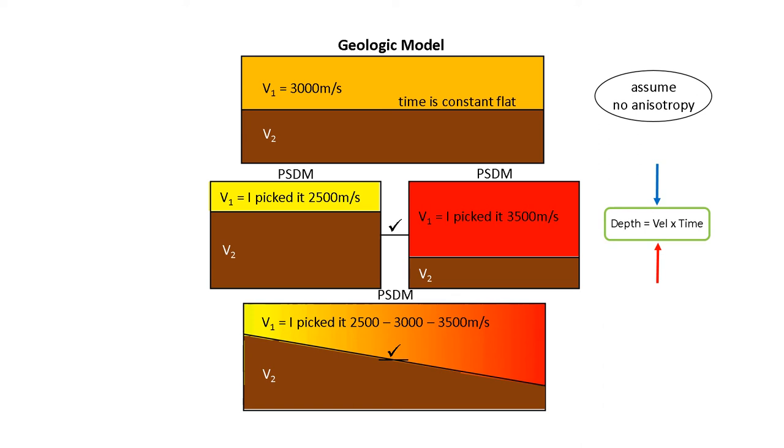What if we pick the velocities laterally changing? So they were 2500 meters per second here on the left and 3500 meters per second here on the right. Velocity is increasing laterally to the right. And the dip goes down and to the right. You can sort of see that here in the middle. The dip goes down and to the right as the velocity increases.